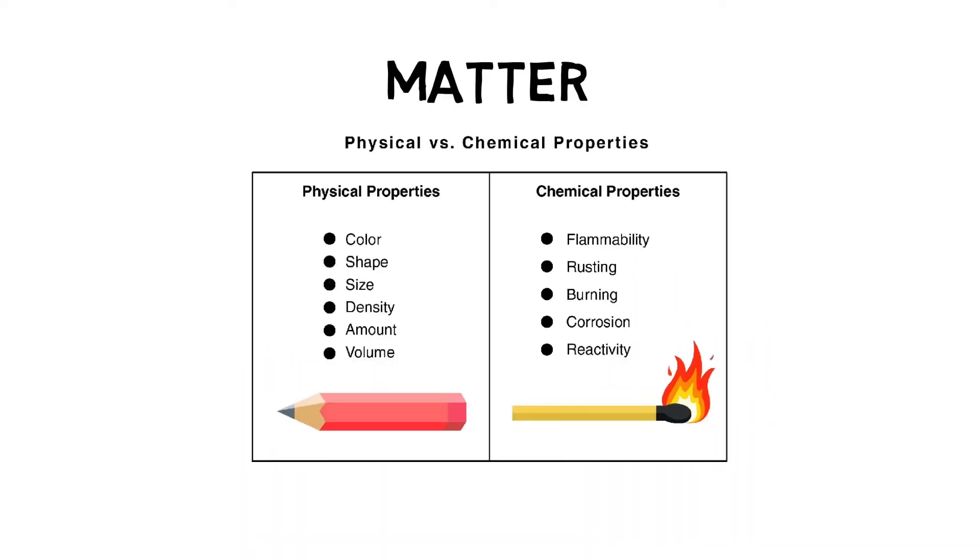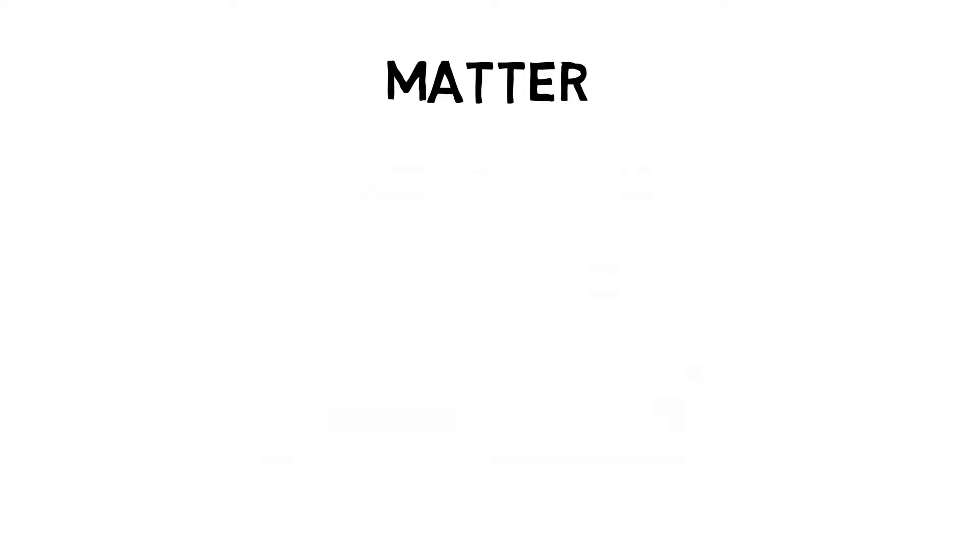So in our previous science lessons, we have discovered that matter can have physical and chemical properties. As we know, physical properties are observed without changing the composition of the substance, while chemical properties are. Similarly, substances can be combined physically, but not chemically.